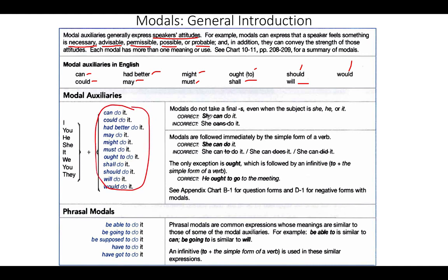There are a few important points to remember about the use of modals. First, modals do not take a final -s even when the subject is she, he, or it. Normally in present simple we add -s to the verb for the third person singular, but for modals we never add the final -s. For example, we say 'she can do it,' not 'she cans do it.'